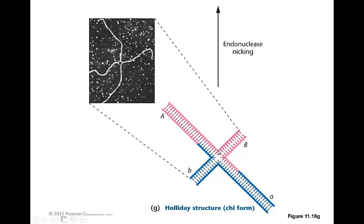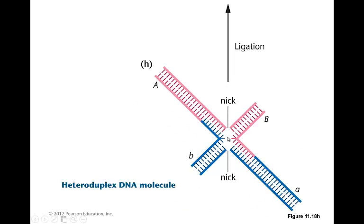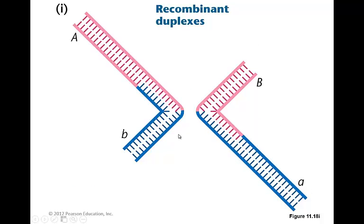Next, we can have additional nicking right here and right here. You can see here's the nick, here's the nick. We can go through a second ligation process where this part is sealed and this part is sealed. And in the end result, what we're going to have is two strands of DNA. And in both of these helices, they're going to have a little bit of DNA from mom, a little bit of DNA from dad, and at the molecular level, it's pretty simple.